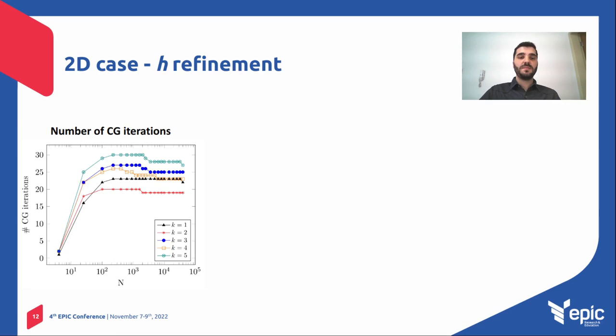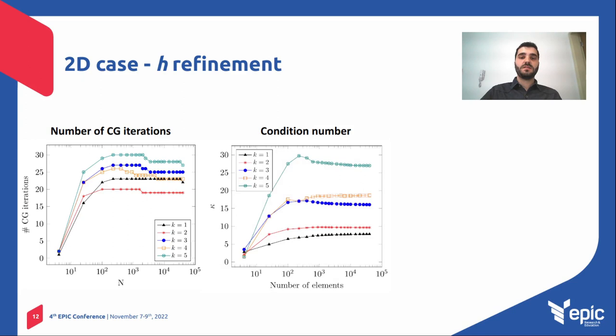So we can say here that our method is independent. The number of iterations in the conjugate gradient method is independent of the mesh refinement. The same conclusion can be drawn to the condition number.